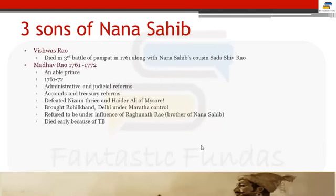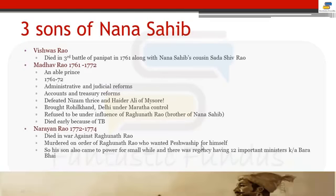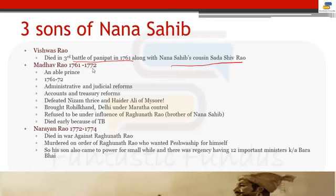Now we will talk about the three sons of Nana Sahib: Vishwas Rao, Madhav Rao, and Narayan Rao — VMN. Vishwas Rao could not become Peshwa because he died in the Third Battle of Panipat in 1761, along with Nana Sahib's cousin Sadashiv Rao. Madhav Rao then became Peshwa for almost 10 years — a very able person with administrative, judicial, and revenue reforms.